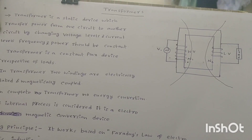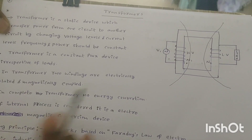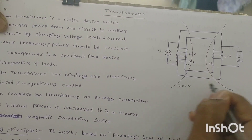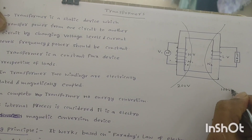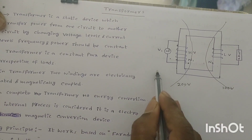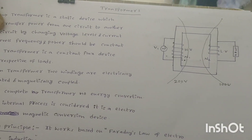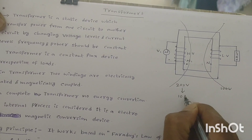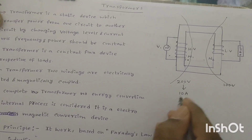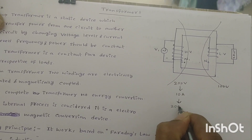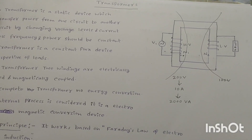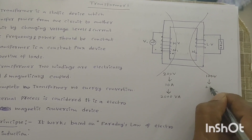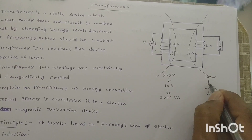Transformer transfers power from one circuit to another circuit by changing voltage levels and current levels, while power and frequency remain constant. For example, consider the primary winding voltage at 200 volts and secondary winding voltage at 100 volts. The primary is the high voltage side and secondary is the low voltage side. On the high voltage side the current is 10 amperes, so power is 200 × 10 = 2000 volt-amperes. Transformer rating is always in volt-amperes.